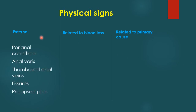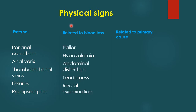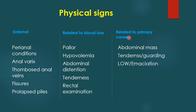Physical signs can be external — perianal conditions, anal varices, thrombosed anal veins, fissures, and prolapsed piles can be excluded by local examination. Signs related to blood loss include anemia, hypovolemia, abdominal distension, abdominal tenderness, and rectal examination, which can exclude most conditions. Signs related to the primary cause include abdominal mass for tumour, tenderness and guarding for diverticulitis, and weight loss for cancer.